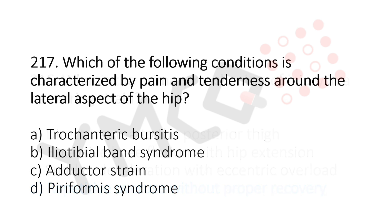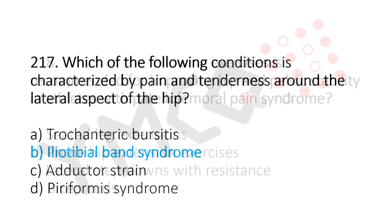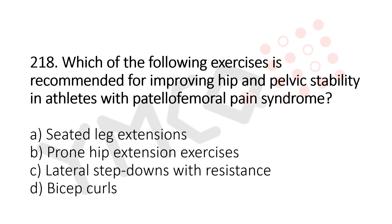Question 217: Which of the following conditions is characterized by pain and tenderness around the lateral aspect of the hip joint? Option A: trochanteric bursitis. Option B: iliotibial band syndrome. Option C: adductor strain. Option D: piriformis syndrome. The answer is option B, iliotibial band syndrome.